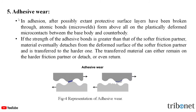The third mechanism is adhesive wear. In adhesion, after the protective surface layers have been broken through, atomic bonds form on the plastically deformed micro contacts between the base body and the counter body. If the strength of the adhesive bonds is greater than that of the softer frictional partner, material eventually detaches from the softer friction partner and is transferred to the harder one. The transferred material can either remain on the harder friction partner, detach, or even return. This process is clearly shown in the figure.